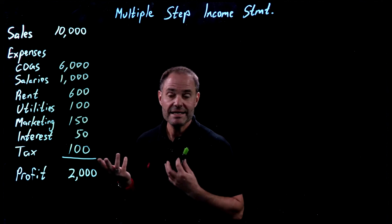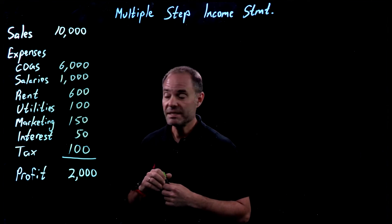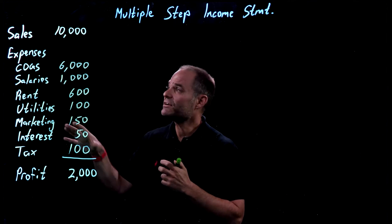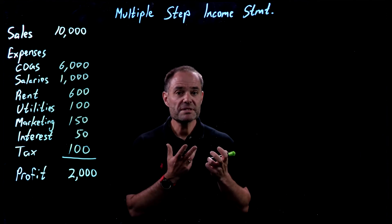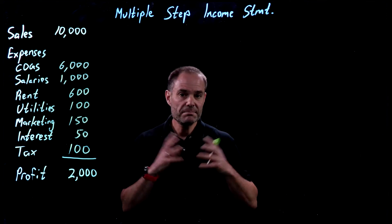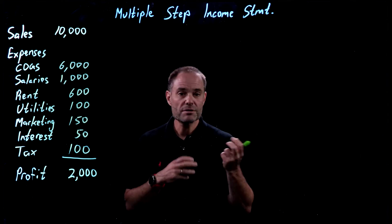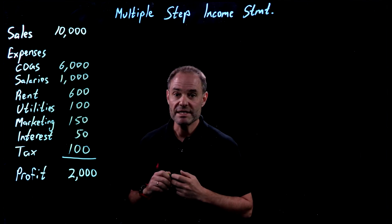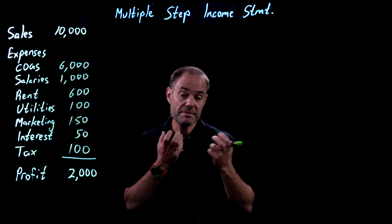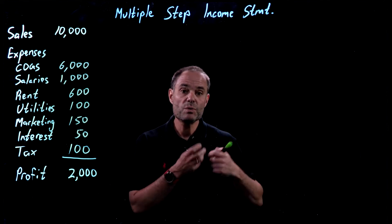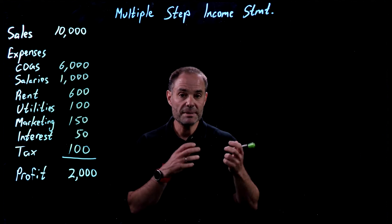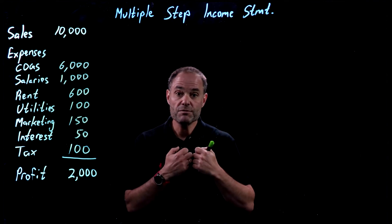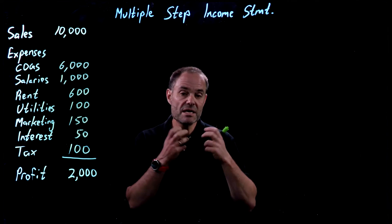That's a perfectly okay income statement — it's got all the information from the company — but it's hard for us to pull a whole lot of useful information out of that without doing some calculations. A multiple-step income statement just restates this with a bit more flair in order to make it easier to pull some very important information about the company out of the income statement very easily. Remember that we're creating income statements and all financial statements for investors to use, and we want to make it easy for investors to compare one company to another and draw information about our company by looking at the statements.